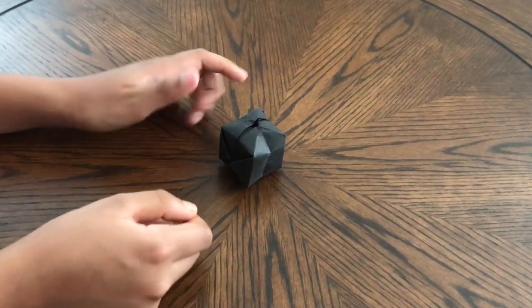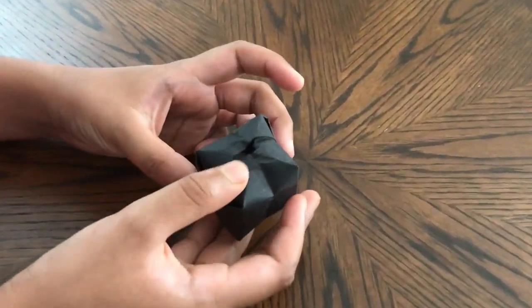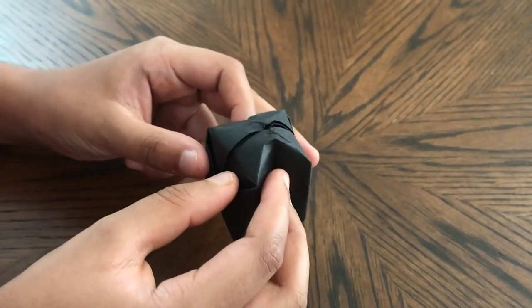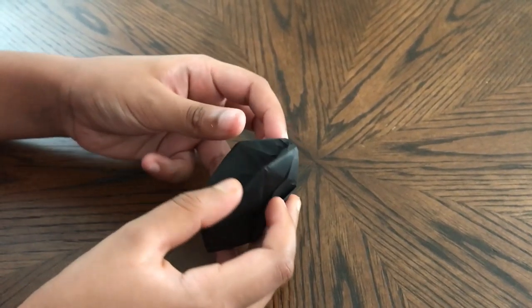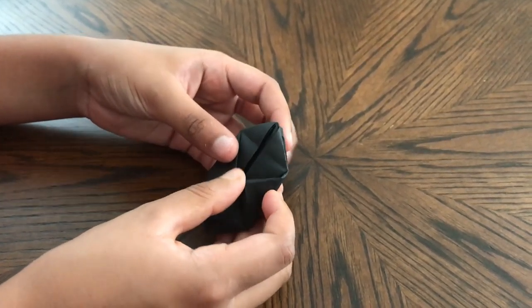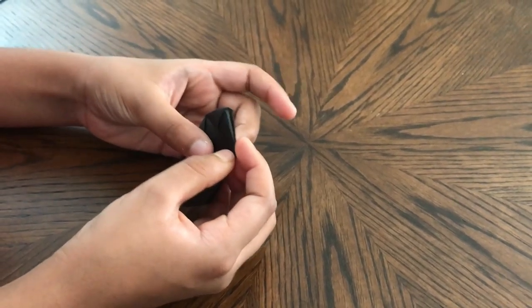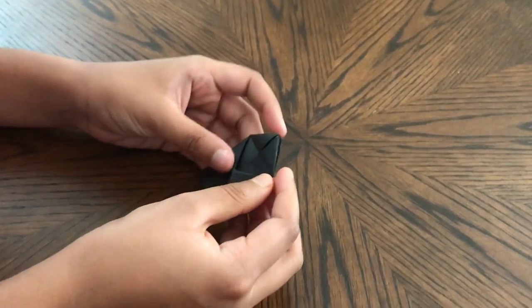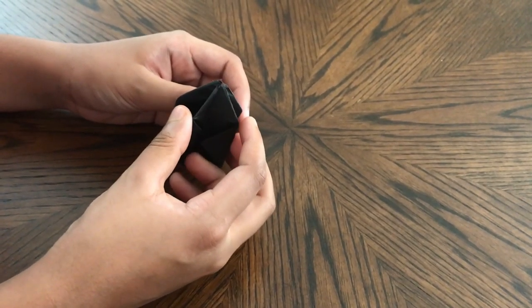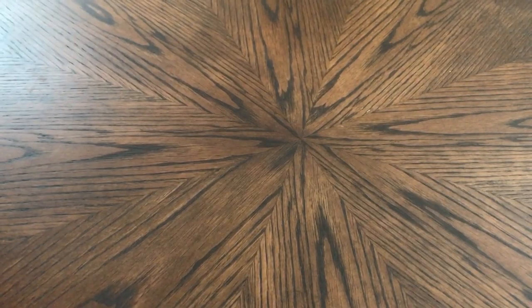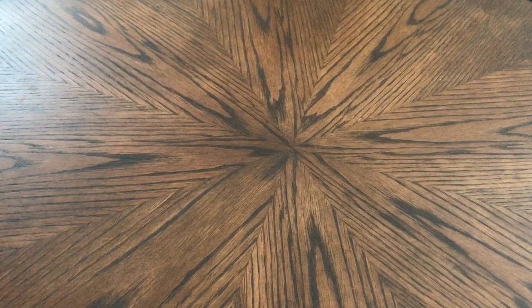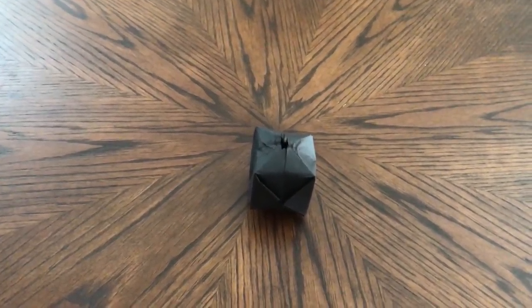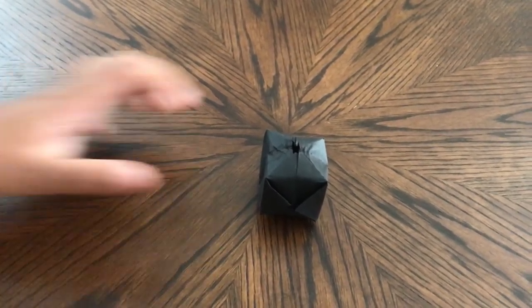Hey everyone, so today we're going to be making this origami water balloon or water bomb. It's very simple and it's actually what the water bomb base gets its name from. Right now it looks like this, and if I just blow into it, it's been inflated. So let's learn how to fold it.